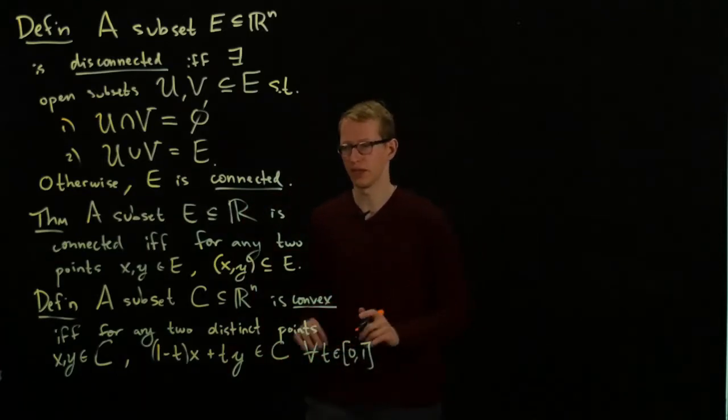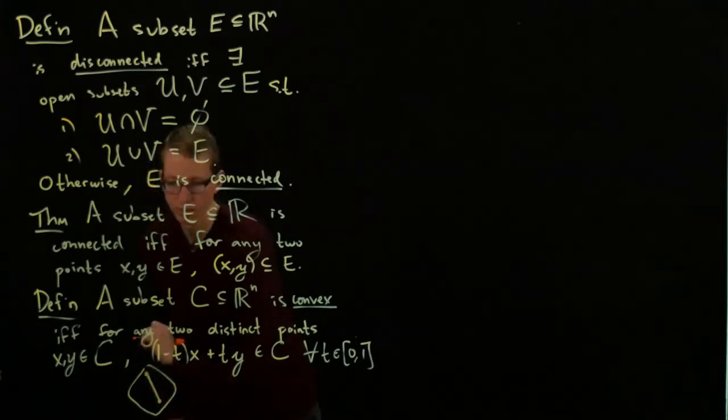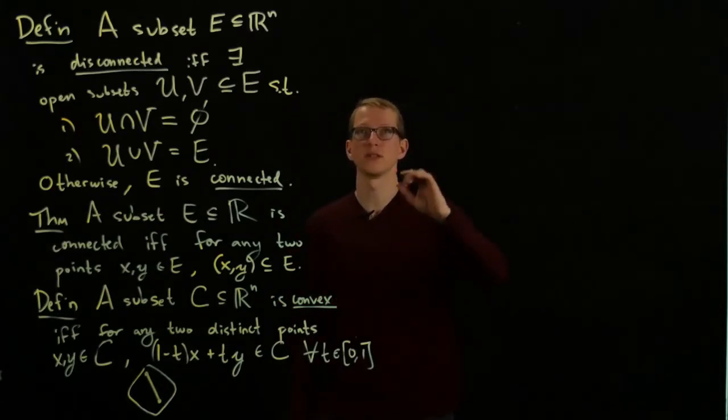Again, you imagine a subset is convex if and only if for any two distinct elements, I can connect them with a straight line between those two points. That's what it means for a subset to be convex.